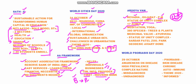Arogya Van is special because it has 380 different species of trees and plants with medicinal values, making it a center for Ayurveda. The Statue of Unity complex, apart from Arogya Van, also holds the Sardar Patel Zoological Park and a Geodesic Aviary Dome.